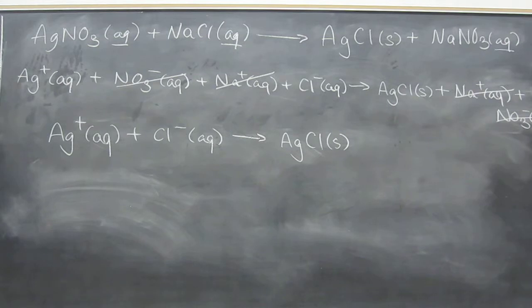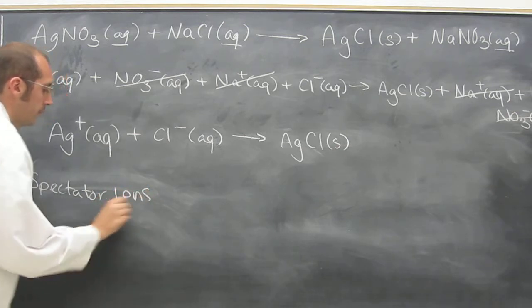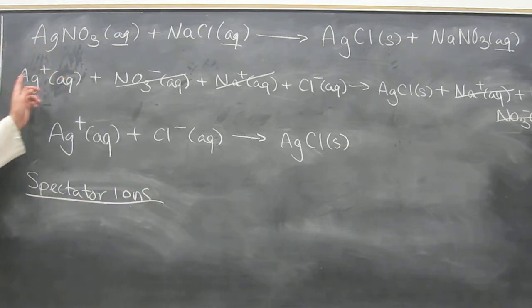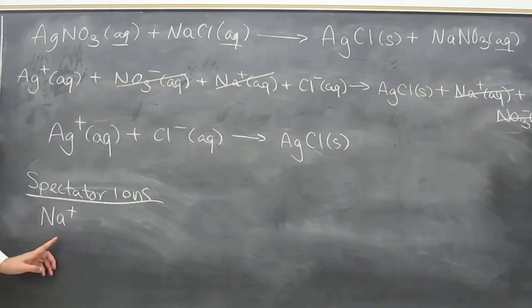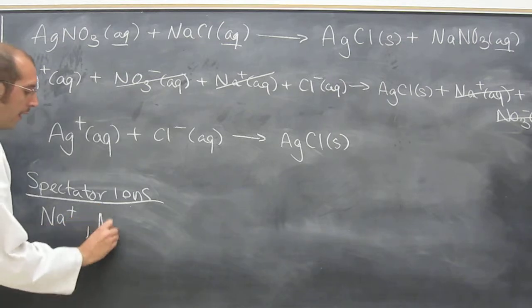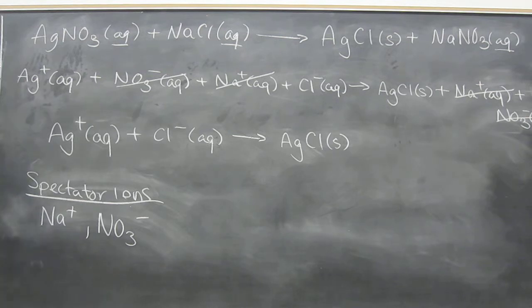And then if you ask, what are the spectator ions? Those are the things that you canceled out in the total ionic equation. So Na plus, like we said, all group ones are always spectators.